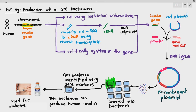Once we identify that bacterium, do we just want one of it? No — we want as many as possible. So we make the bacterium undergo asexual reproduction, because when it reproduces asexually it produces identical copies. So if that bacterium can produce human insulin, all its future generations will also be able to produce human insulin.